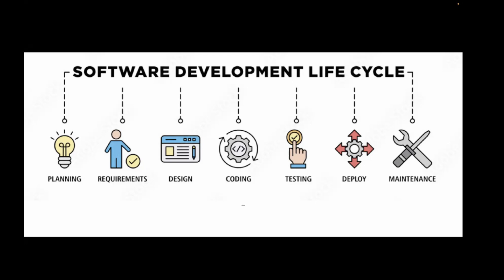Then we have the testing phase in which end-to-end testing is done. Then we have the deploy phase in which, after testing, the code is deployed to production. And we have the maintenance phase in which you monitor bugs — P0, P1 — and observe metrics in production. In upcoming videos, we'll also see that coding starts after the requirement phase, and testing also starts right from there.